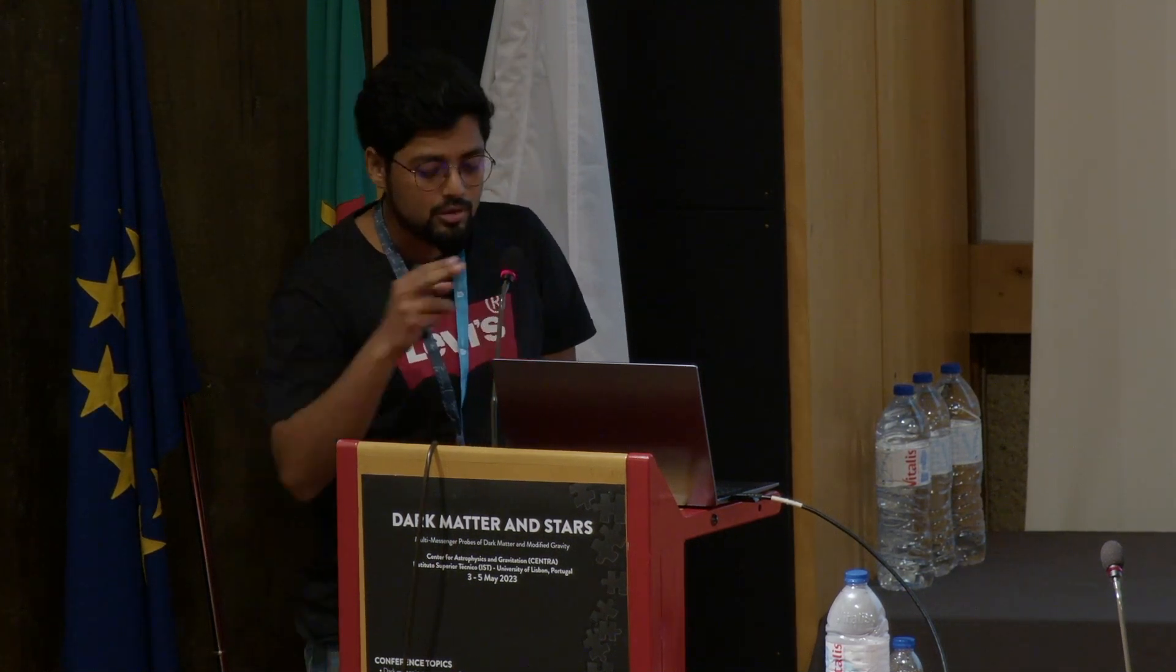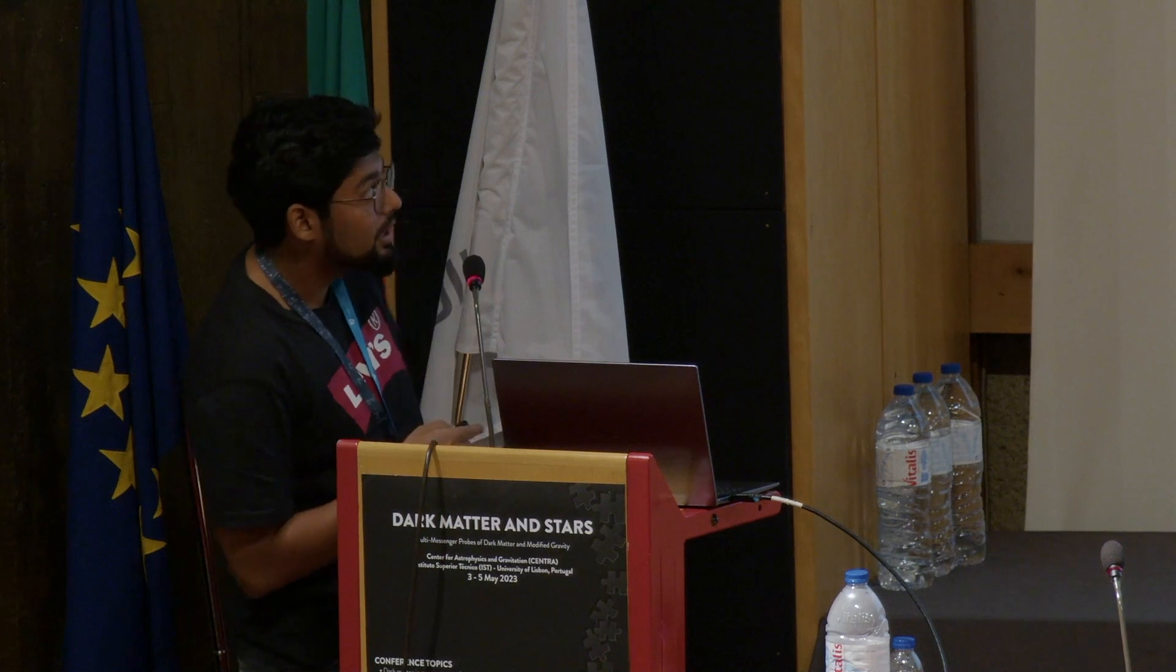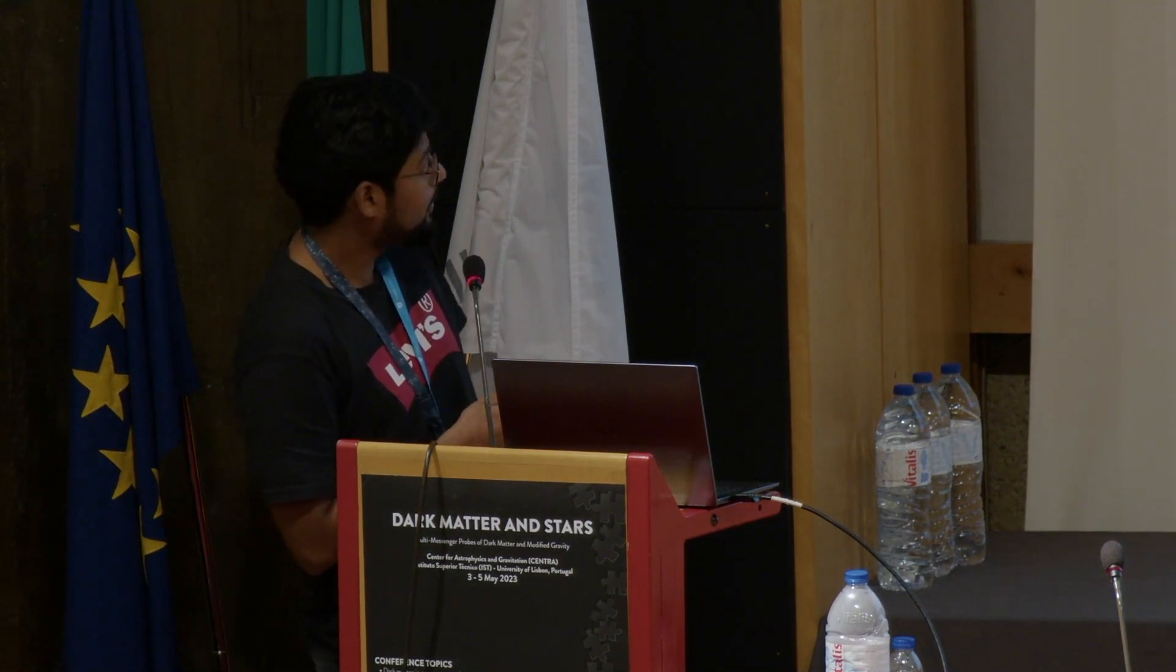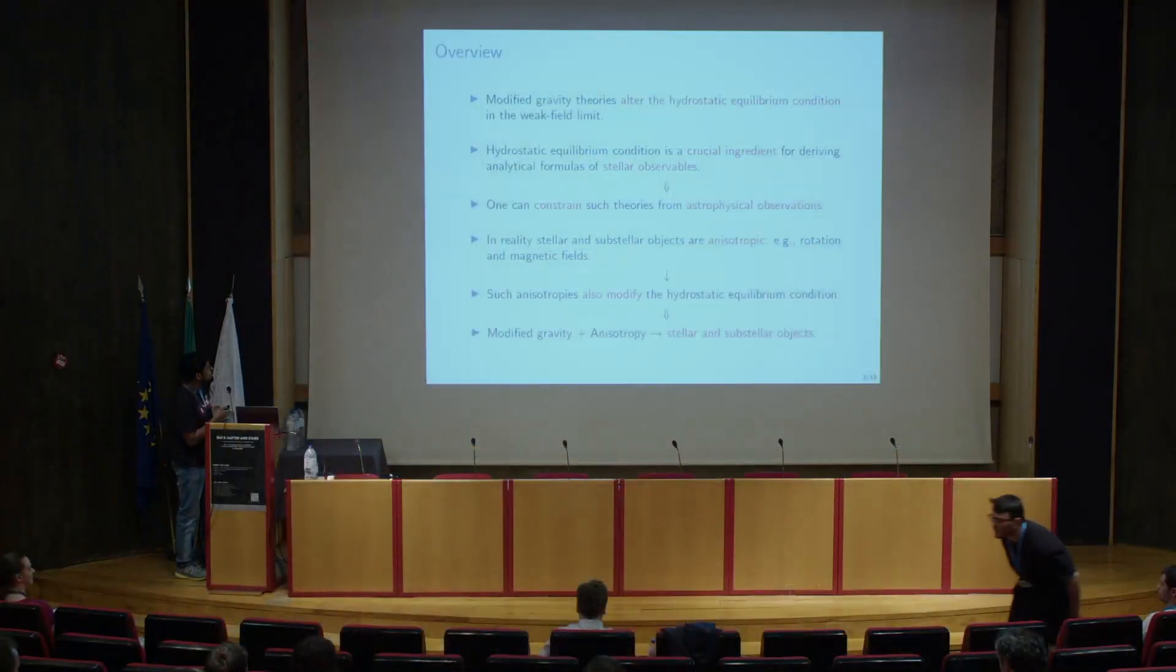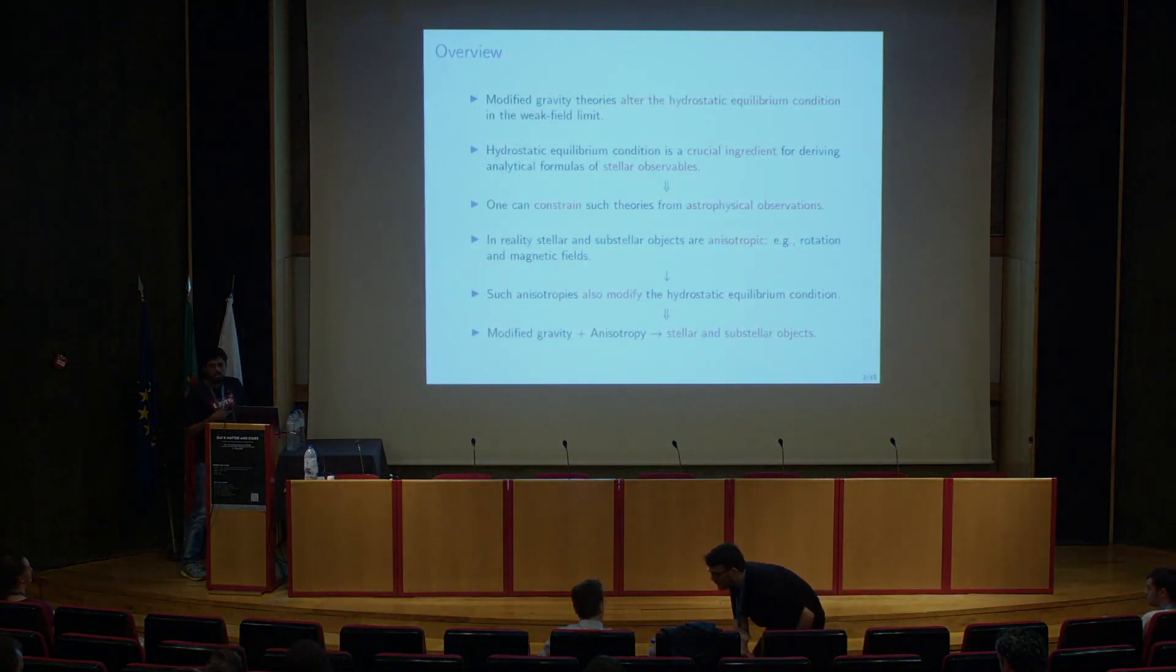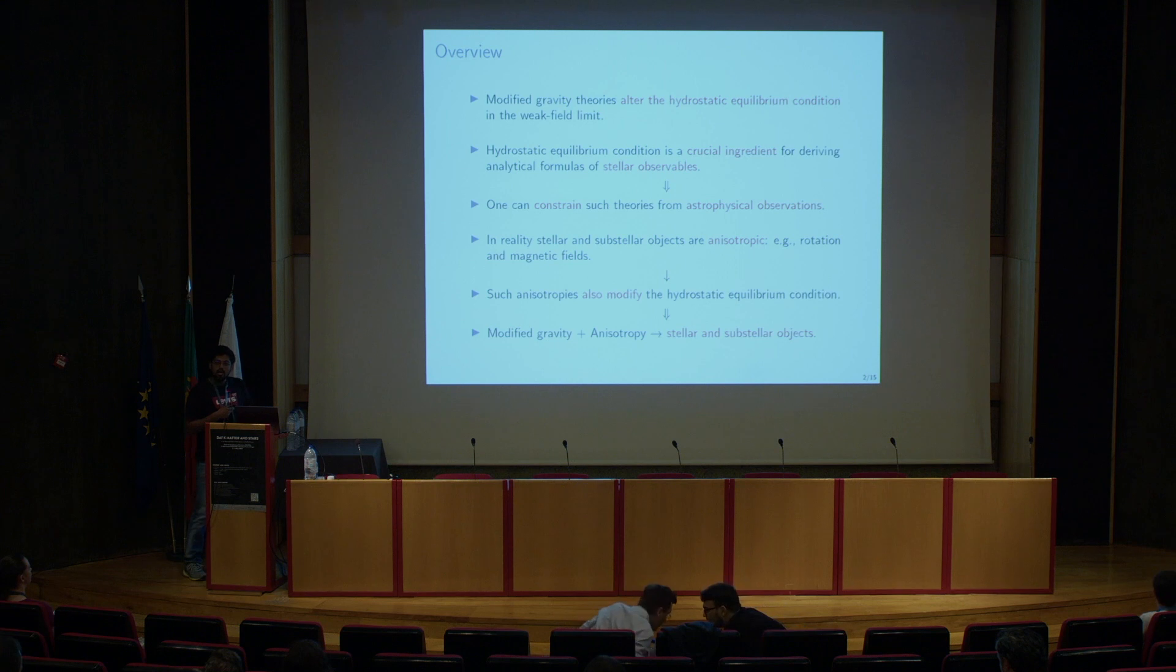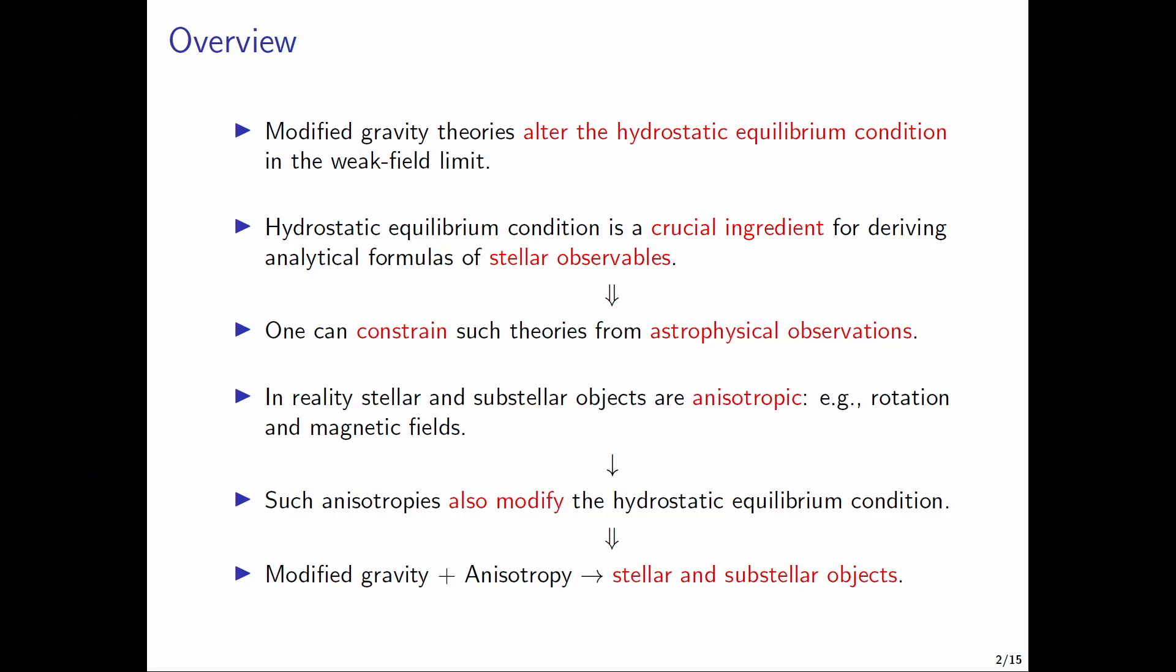Today I'm going to speak about modified gravity and stellar physics. This is the overview of my talk where we note that modified gravity theories alter the hydrostatic equilibrium conditions, and these conditions are crucial to have the analytical formulas for stellar observables like mass, radius, and luminosities. Therefore one can put constraints on these modified gravity theories by comparing the modified predictions with the astrophysical observables.